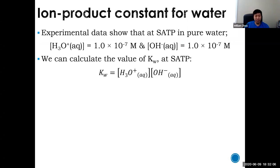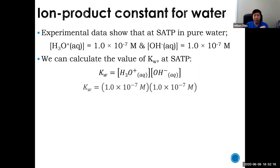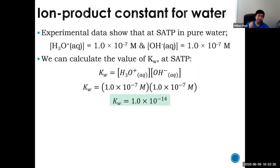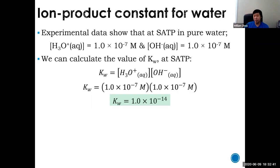Since Kw equals the concentration of H₃O⁺ times the concentration of OH⁻, you plug in 1.0×10⁻⁷ squared and get 1.0×10⁻¹⁴. This is the Kw value for water at 25°C — you need to know this number. It should be in your data booklet, but even if it's not, you still need to know it.